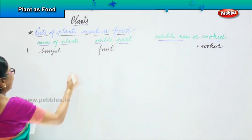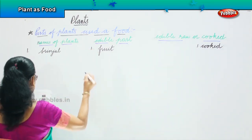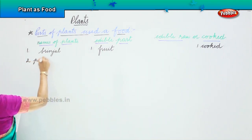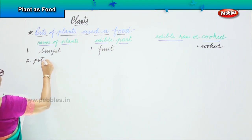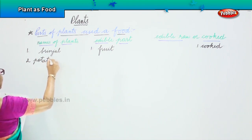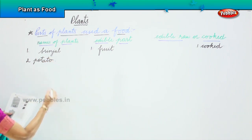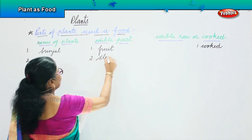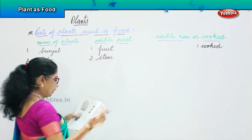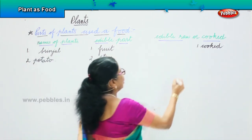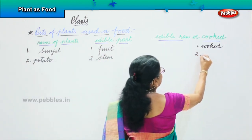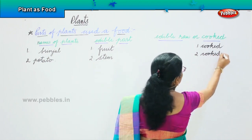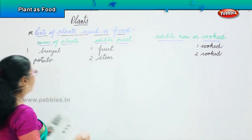Next we are going to look at potato. What part of a plant is a potato? Potato is a stem. Now how do we eat this potato? It has to be cooked. You can't eat it raw. Potato has to be cooked and eaten.